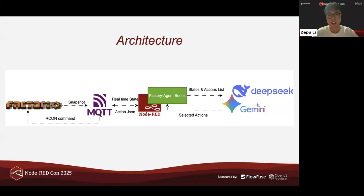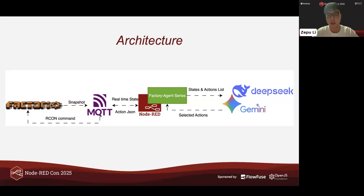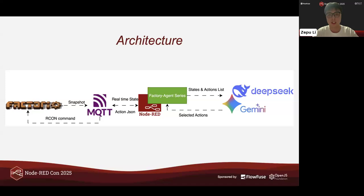Here is the high-level architecture of the project. Factorio sends a snapshot of its state to Node-RED via MQTT. Node-RED receives this real-time state and uses the Factory Agent Series nodes — an open source project we built for Node-RED — to format states and actions, then sends them to large language models such as DeepSeek and Gemini. The LLMs plan and select appropriate actions for execution. Node-RED then extracts the finalized selected action JSON and sends it back to Factorio via MQTT remote control commands. This entire loop is the autonomous decision-making process.